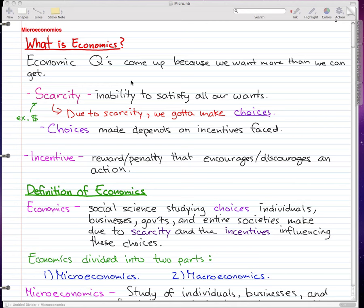And now these are definitions that we need to know and these could potentially come up on tests and you should take note of them. So scarcity is the inability to satisfy all our wants and that's pretty intuitive. We have all these wants but we only have limited income. So there is scarcity.